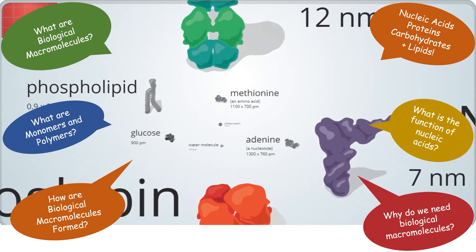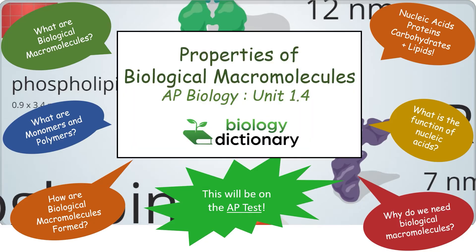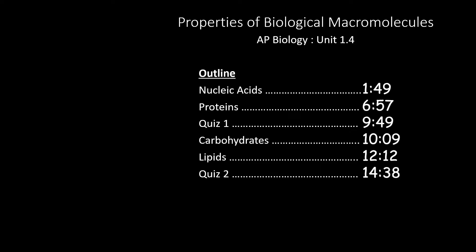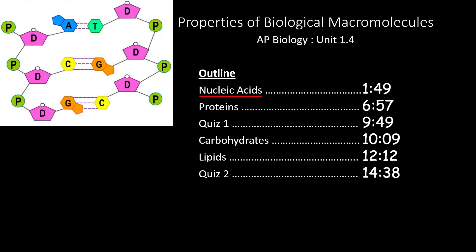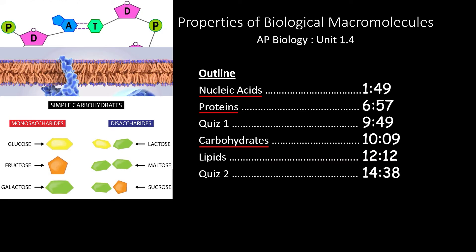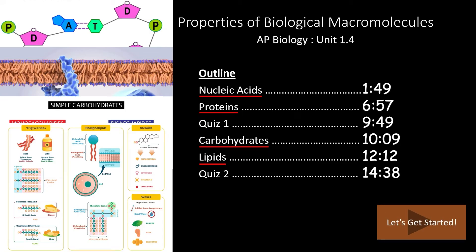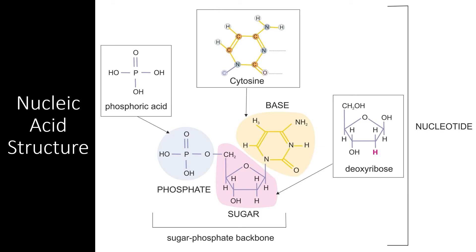These macromolecules are what make life on Earth possible — plus they will be on the AP test, so stick with us. This video covers section 1.4 of the AP Biology curriculum: properties of biological macromolecules. We will start with nucleic acids, then proteins, then carbohydrates, and finally lipids. If you only need to review one topic, feel free to skip forward to the times outlined here. Let's get started.